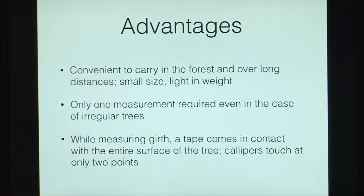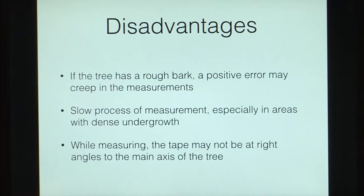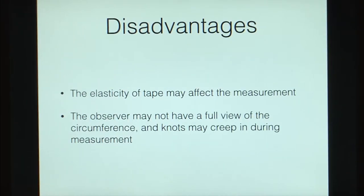Tape advantages: it is very small and light, easily carried in a pocket; only one measurement is required; in measuring girth it comes in contact with the entire surface; the reading is not direction-dependent (unlike calipers for irregular cross sections); and no adjustment is needed as it is not a mechanical device. Disadvantages: rough bark may give a positive error; it is slow in areas with dense undergrowth; measurements must be at right angles; tape elasticity may affect measurements; and the observer may not have a full view, allowing knots to creep in.